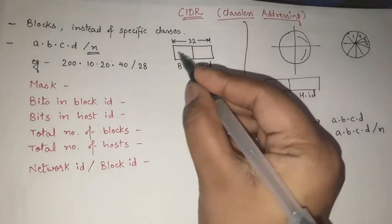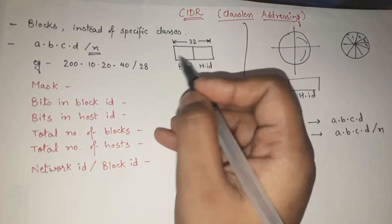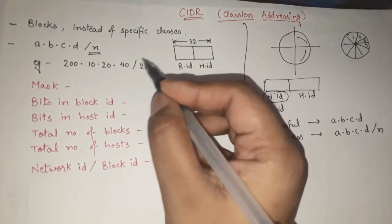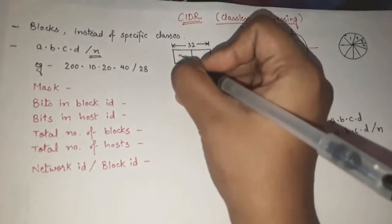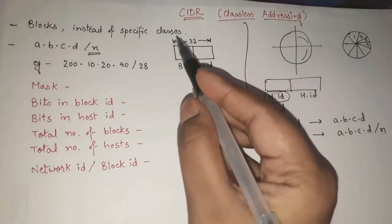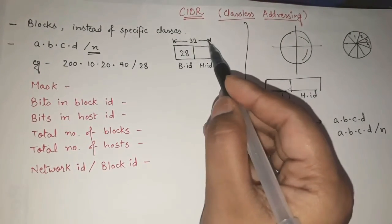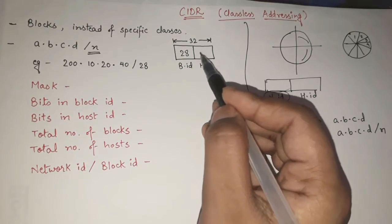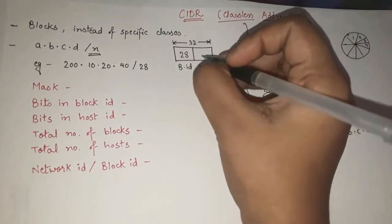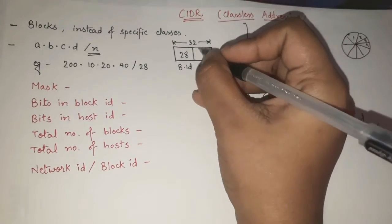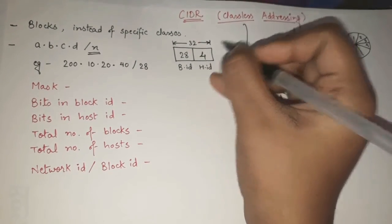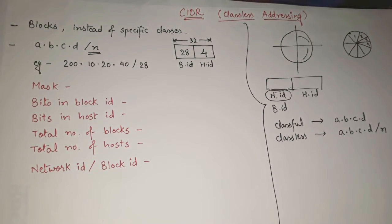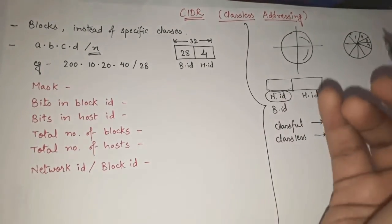For the address 200.10.20.40/28: the slash N tells us the block ID directly, so the block ID is 28 bits. Since the whole IP address is 32 bits, the host ID will be 32 minus 28, which equals 4 bits. So total 32 bits — block ID is 28 bits, host ID is 4 bits.